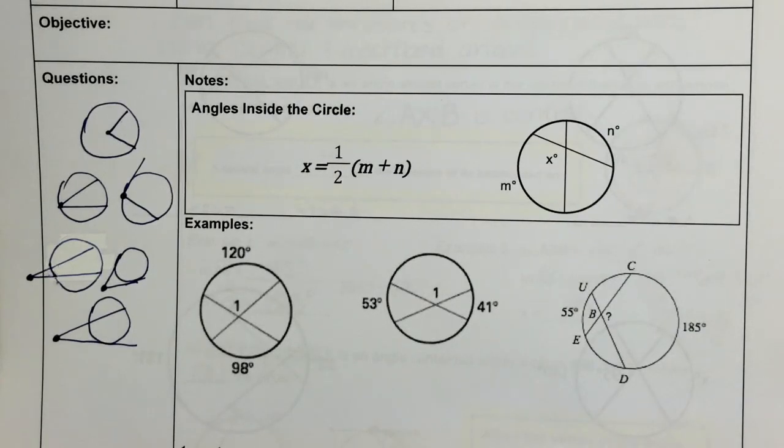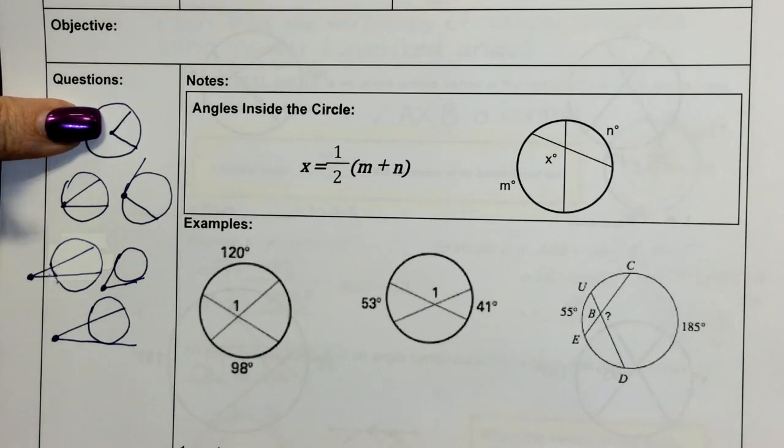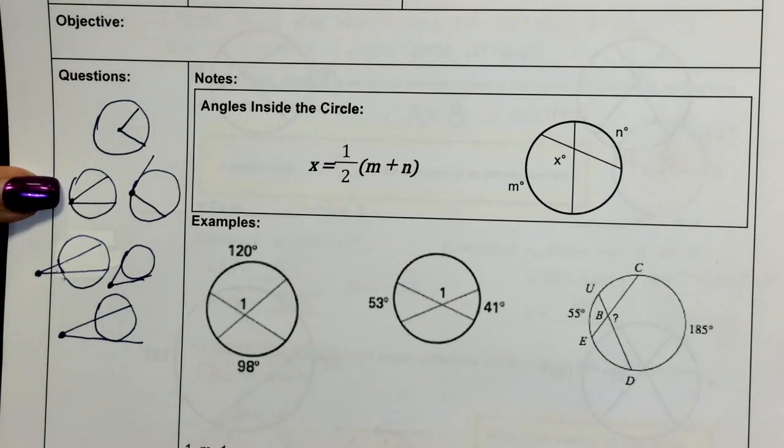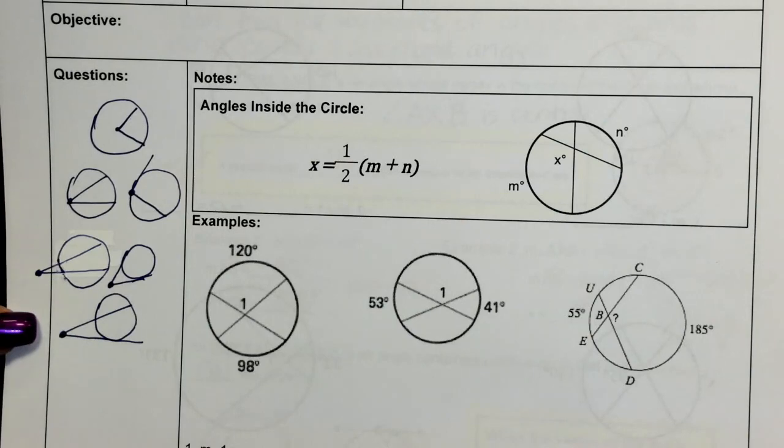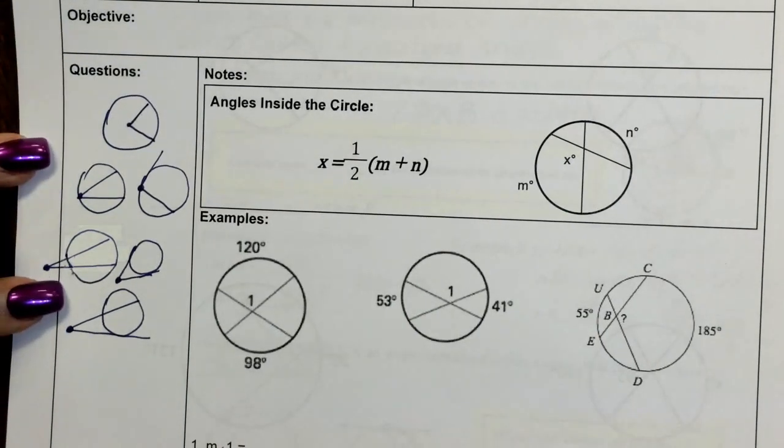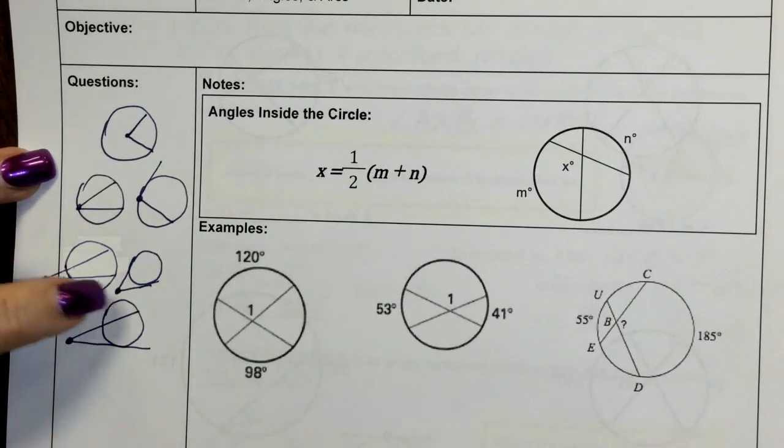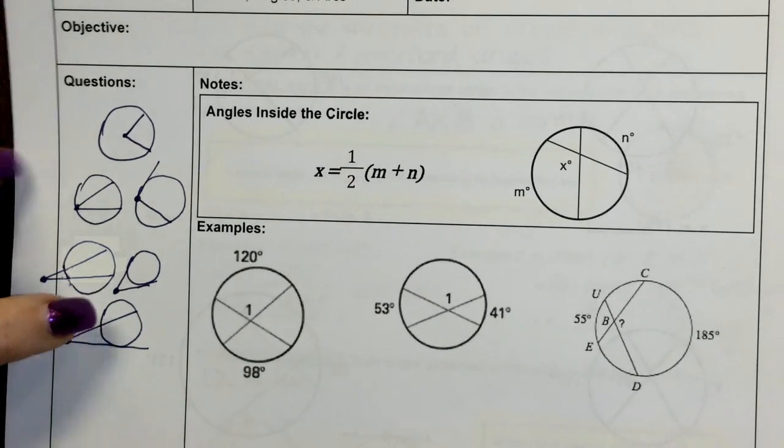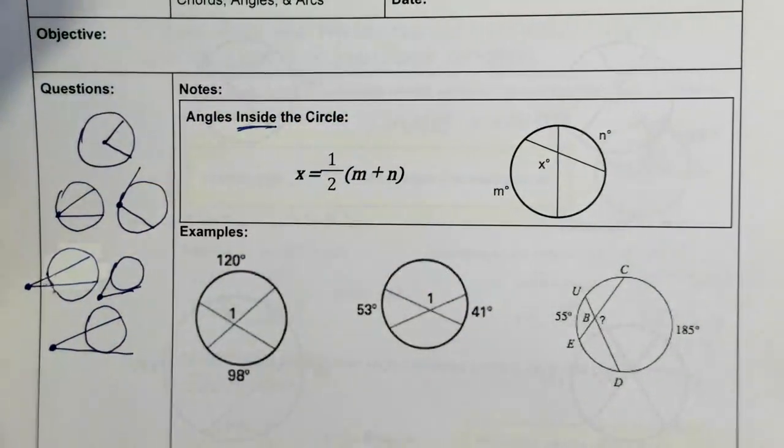All right, our last lesson with angles and arcs with circles has to do with angles inside the circle. We have talked about what happens when the vertex is in the center where the angle is equal to the arc. We have talked about what happens when the angle vertex is on the circle - the angle is half the arc. We talked about what happened when the vertex is outside the circle in these three situations. The angle is half of the difference between the arcs. Today we're going to focus on what happens when the angle is inside the circle.